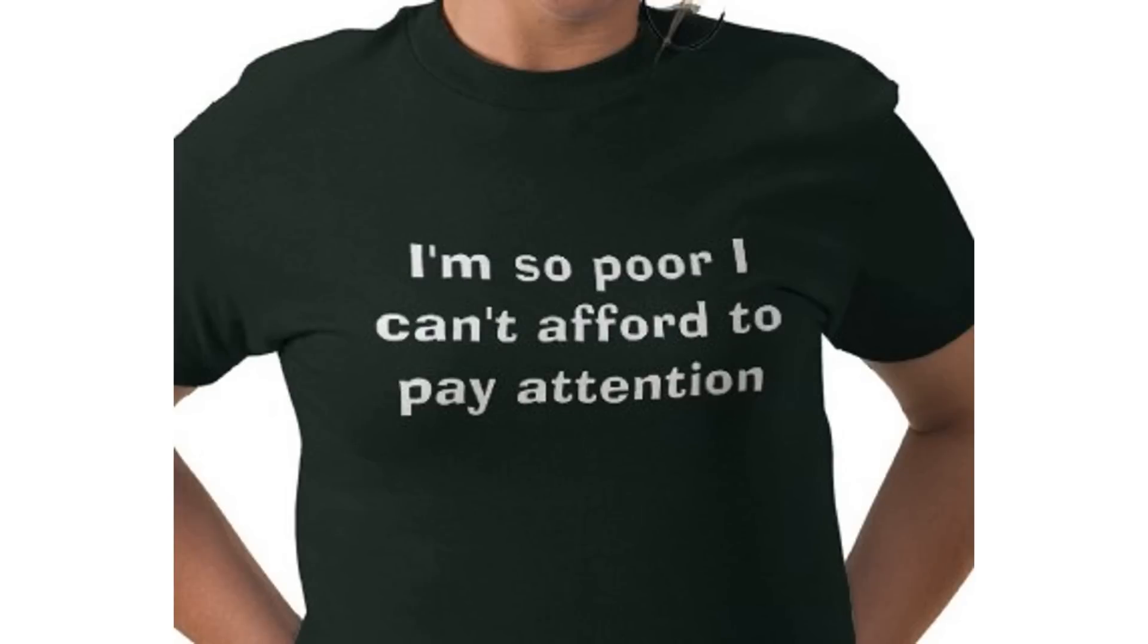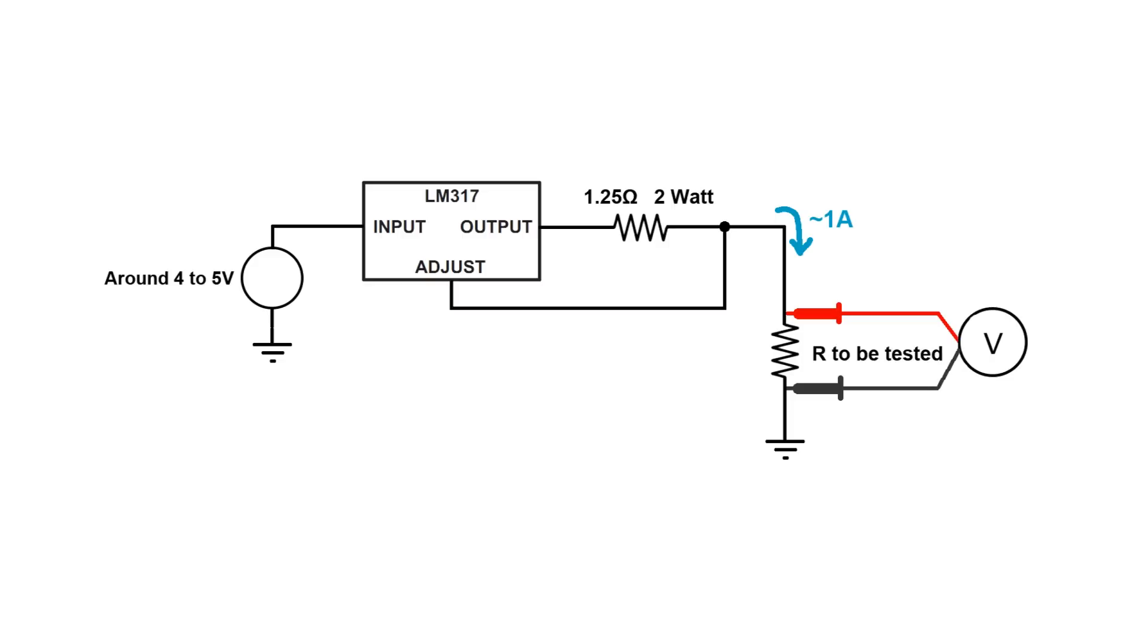Ok, now what if you don't have a current limiting power supply like I do? Well, you can build a constant current source out of an LM317 using this circuit. In theory this should give you a constant current of 1 amp regardless of what you have connected to it.